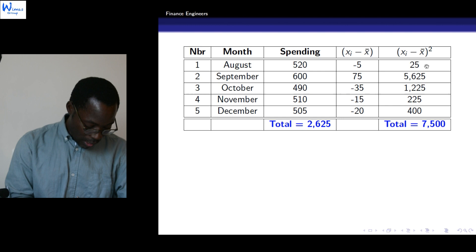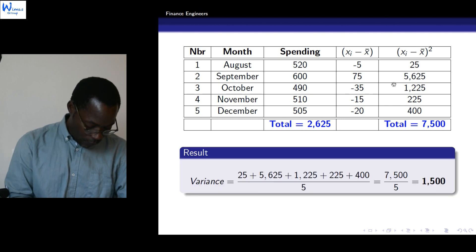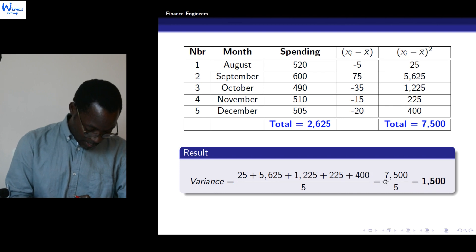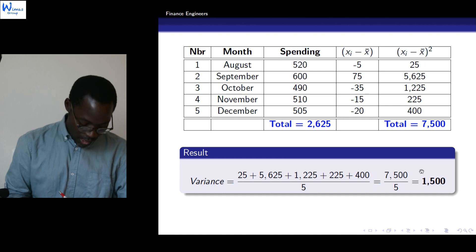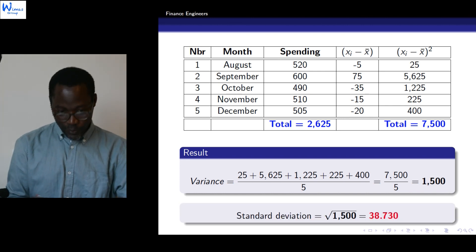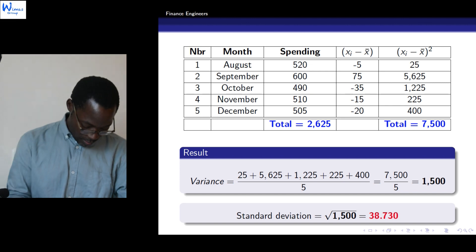So when we compute now the mean of these squares, we will obtain 7,500, which is the sum, divided by the number of these observations, which is 5. Then we will obtain what we have called variance, which is 1,500.